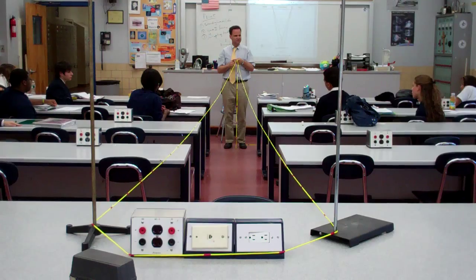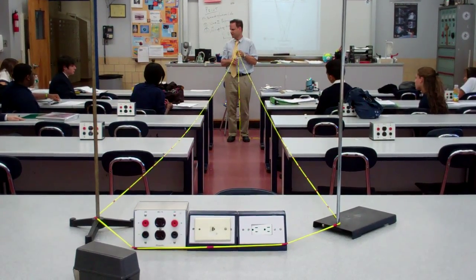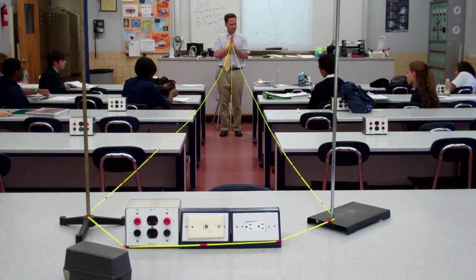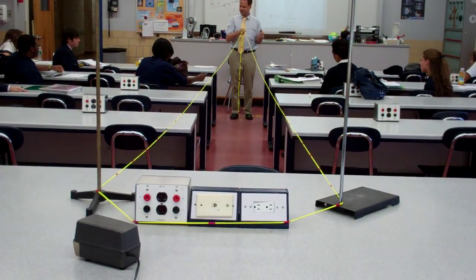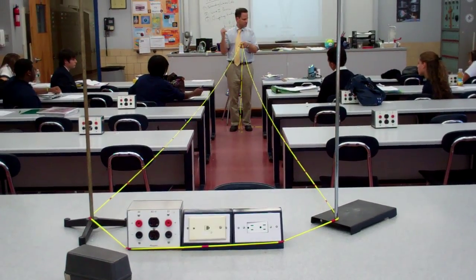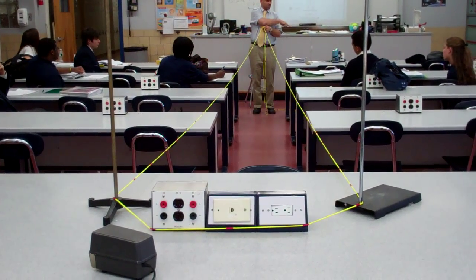Because what? Crest meets crest. Or it could be trough from trough. So, we always get a bright line in the middle. And then what happens over here or here? Destructive.